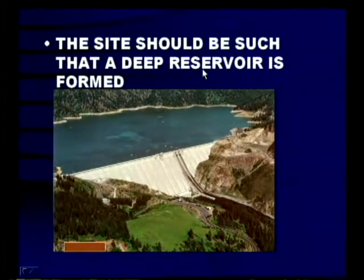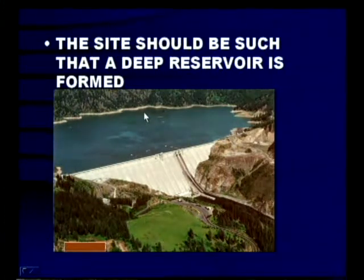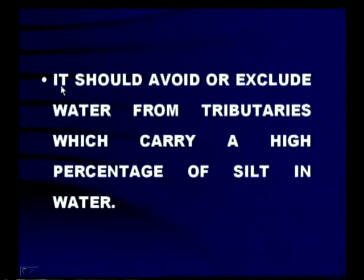The site should be such that a deep reservoir is formed. If the depth of the reservoir is more and the surface area is less, evaporation losses can be kept to a minimum. It should avoid tributaries which carry a high percentage of silt — if silt entering is more, over a period of time the storage capacity of the dam is reduced. So tributaries carrying more silt should be avoided or proper measures taken to control silt entry into the reservoir.